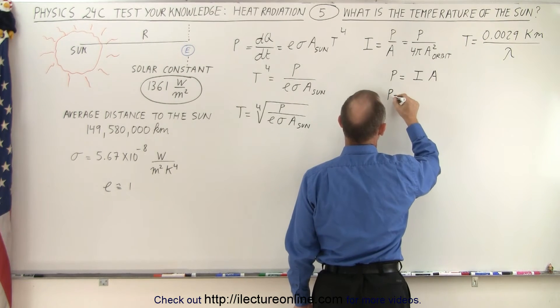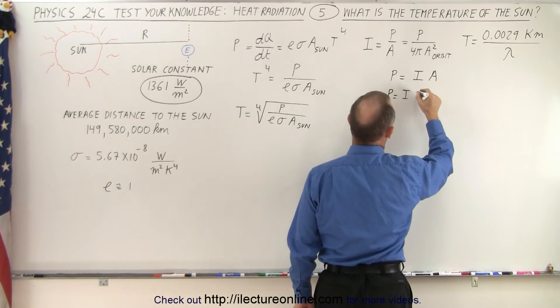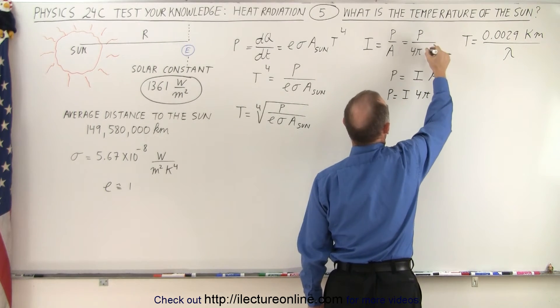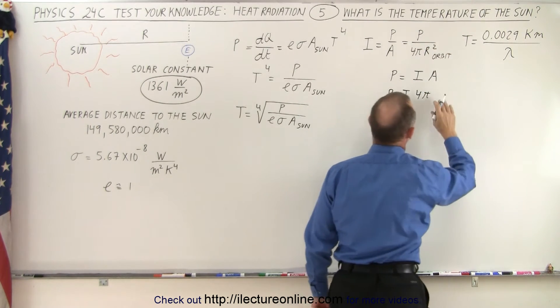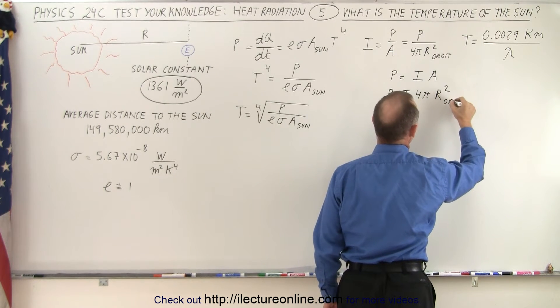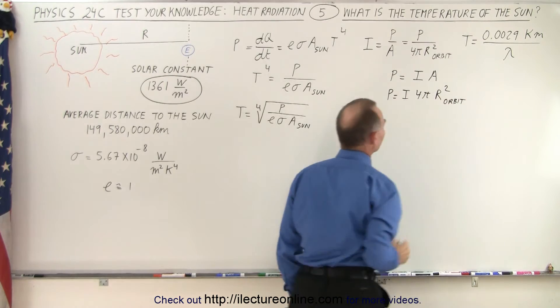So the power is equal to I times 4π times—oh, that shouldn't be A, that should be R—R², so that would be 4π times the radius squared. That would be the radius of the orbit like this.